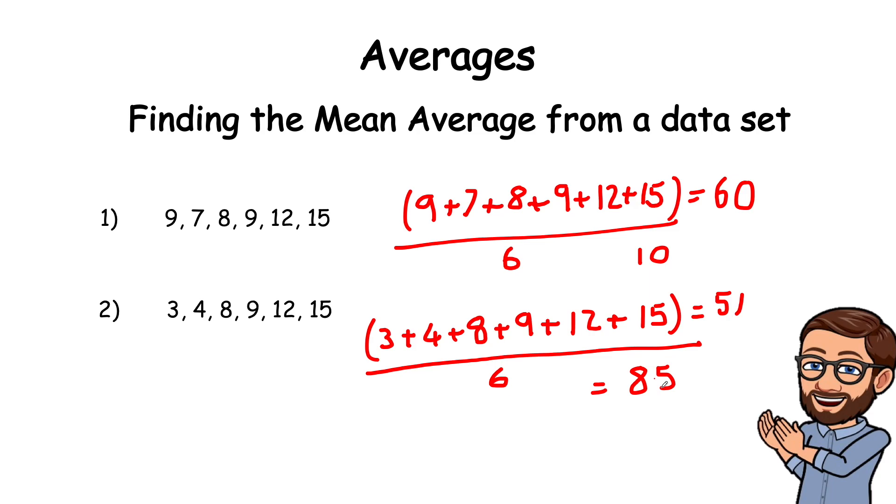So if it doesn't go exactly what will happen is you'll have to split a number and make a decimal. So 51 can't be divided by 6. So we've had to split this one up so 8.5.